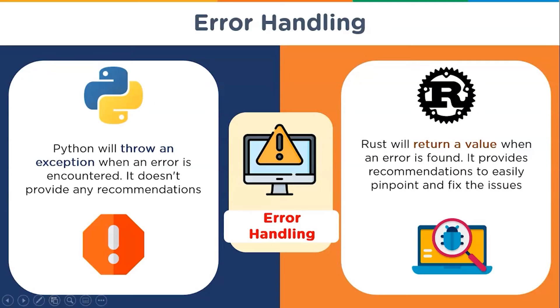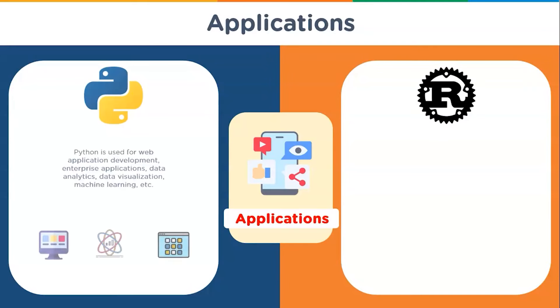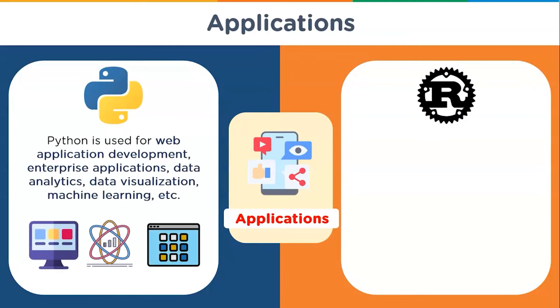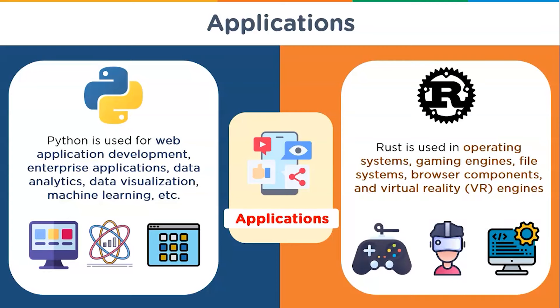Let's see some applications of these languages. Python is used for web application development, enterprise applications, data analytics, data visualization, and machine learning. Whereas Rust is used in operating systems, gaming engines, file systems, browser components, and virtual reality engines. Microsoft has introduced various components to make Rust grow and prosper.